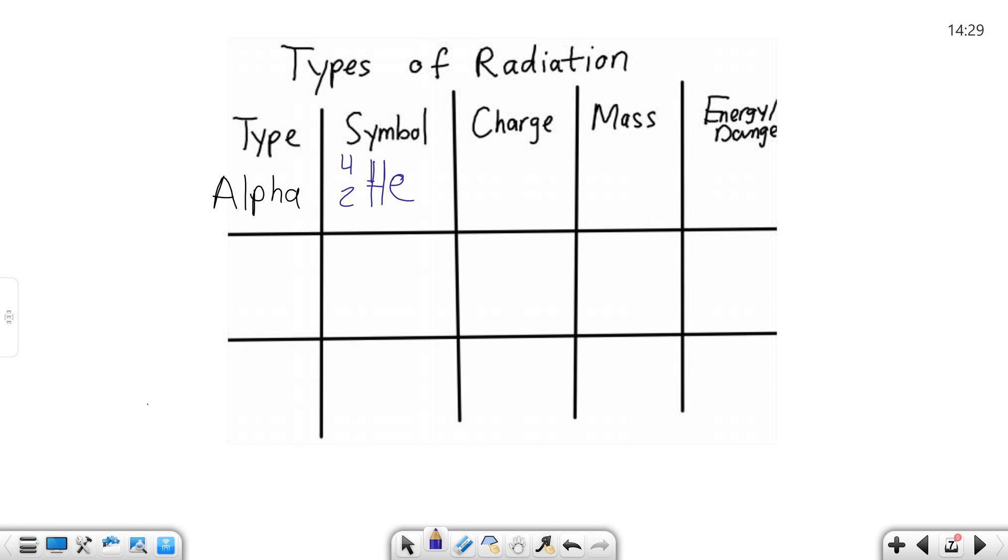It just happens to be two protons and two neutrons being released. That's why we use that symbol for alpha particles. The charge of it is going to be positive because it has protons and no electrons. For mass, I do this very generally, I just say it has a large mass, and that's going to be in comparison to the others.